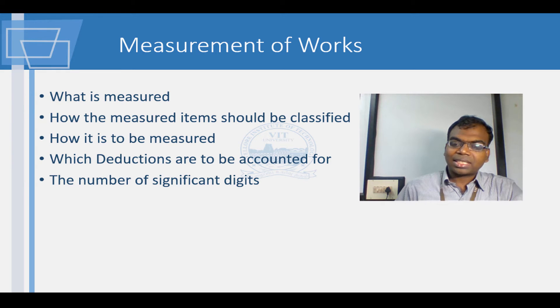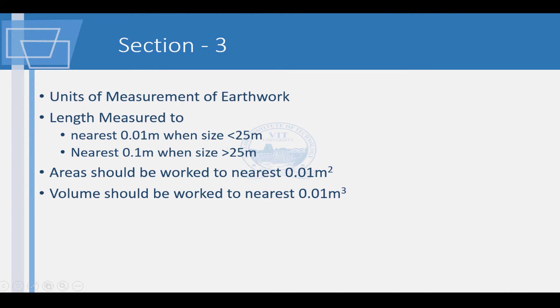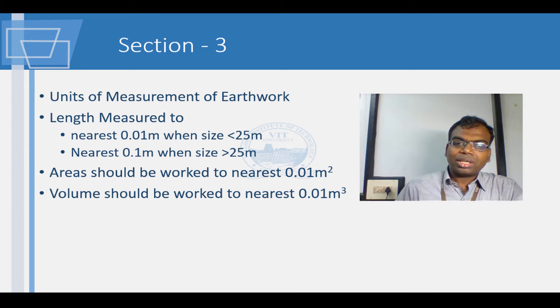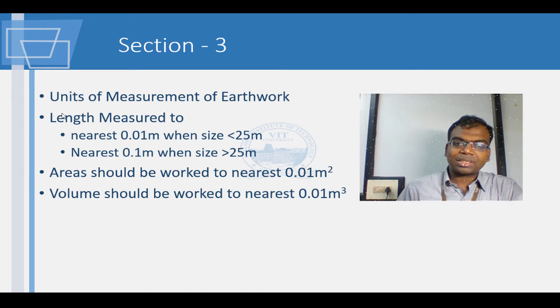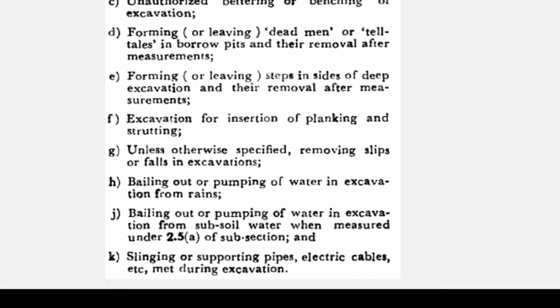In following these guidelines, standard and consistent way to report values is achieved. Earthwork is an important item measured. In taking the measurements, the fineness of length measurement ranges between 0.1 and 0.01. Areas and volumes are always rounded to two decimal places with unit fineness. Clause 2.3 of this section gives the items that may be excluded from measurement. However, the requirements for successful completion of the job should be described.